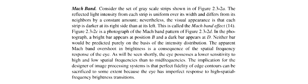We have considered a set of grayscale strips as shown in these figures. The reflected light intensity from each strip is uniform over its width and differs from its neighbor by a constant amount — as you have seen, each neighboring strip is decreasing. Nevertheless, the visual appearance is that each strip is darker at its right side than its left. This is the so-called Mach Band Effect.